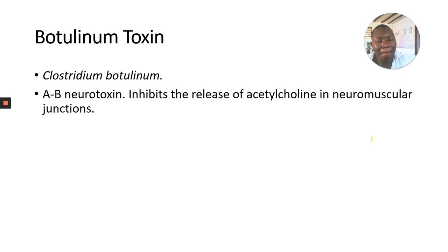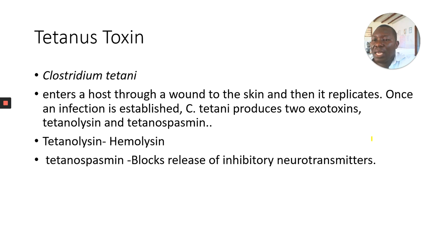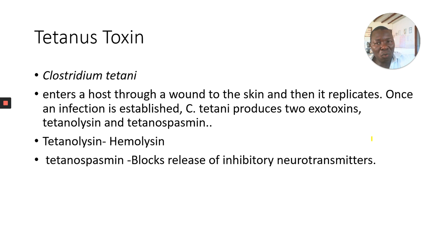Tetanus toxin: Clostridium tetani enters the host through a wound in the skin and replicates. Once the infection is established, C. tetani produces two exotoxins: tetanolysin and tetanospasmin. Tetanolysin is a hemolysin — it kills and destroys cells. Tetanospasmin blocks the release of inhibitory neurotransmitters. This affects the muscles, causing them to contract — and if the muscle has contracted, it will not relax anymore, causing a deformity in the affected part of the body.